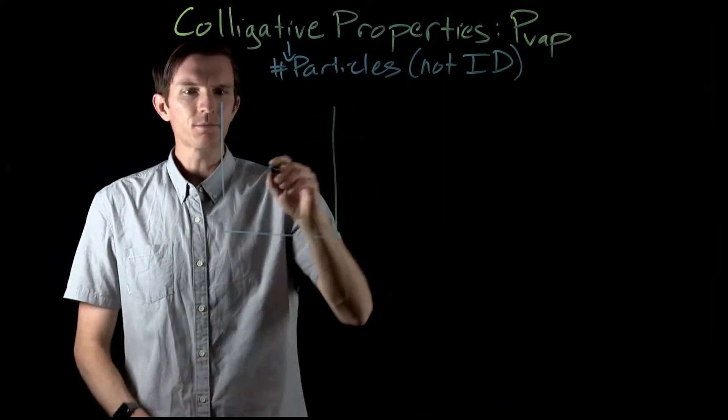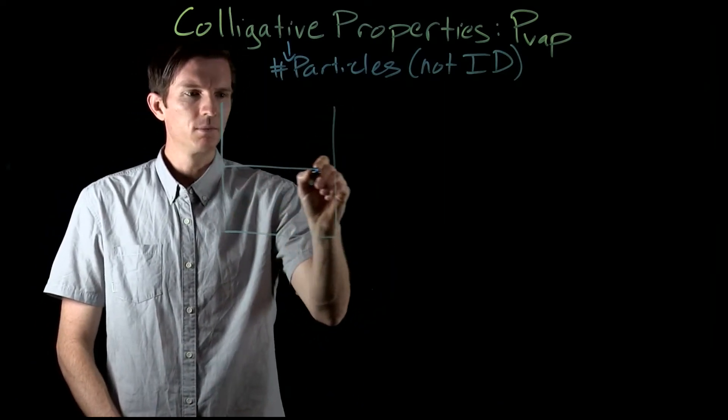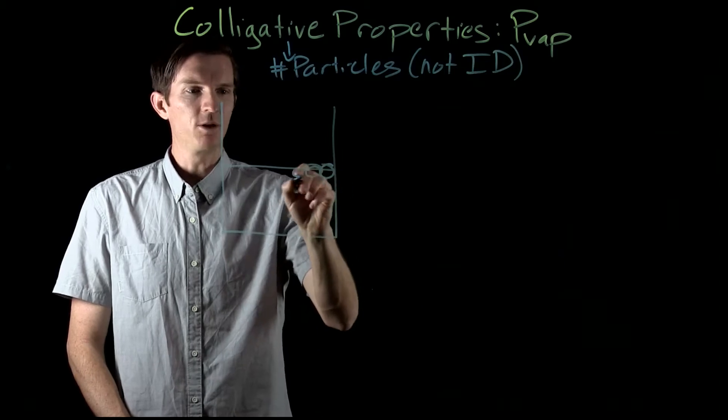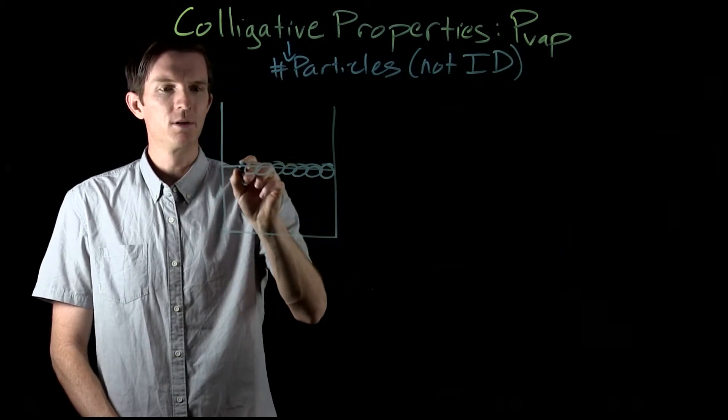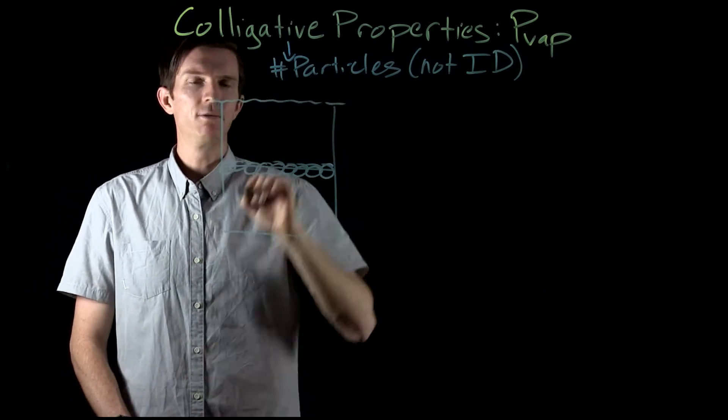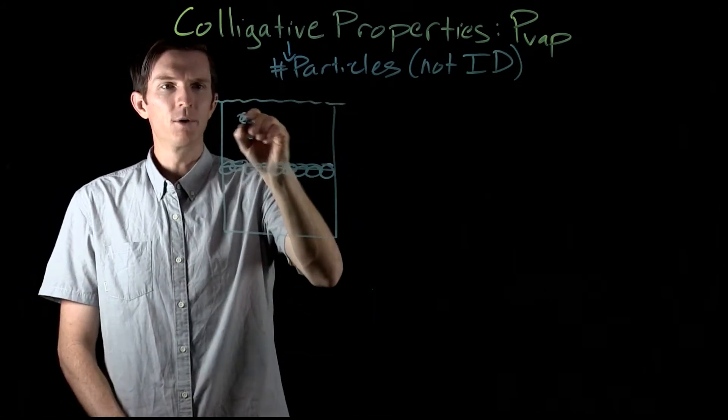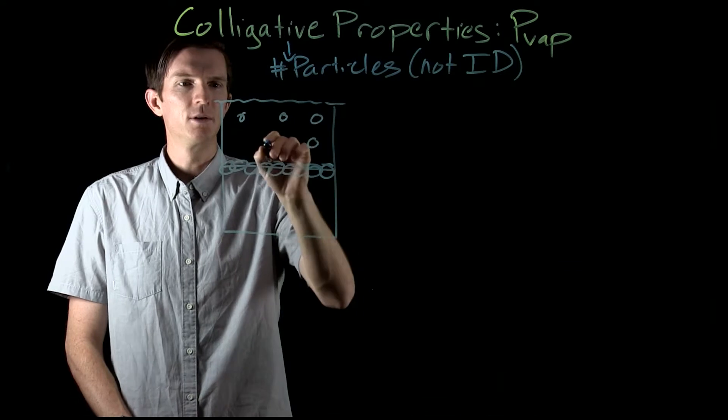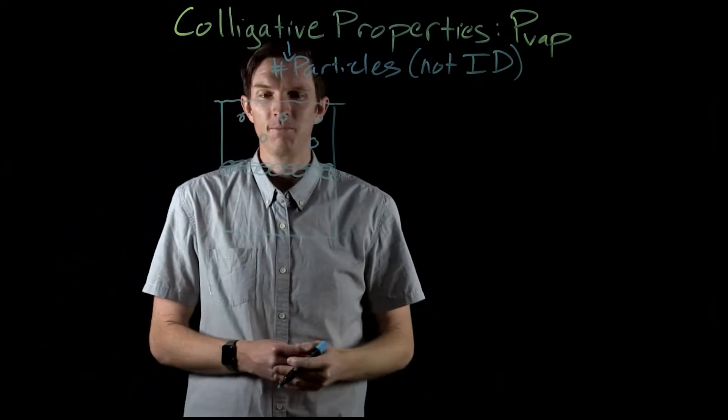So let's say we have a container that has a liquid in it. We've got a bunch of particles or molecules at the surface. And if we go ahead and seal this off, we're going to get some of those particles above that. And that contributes to the vapor pressure.